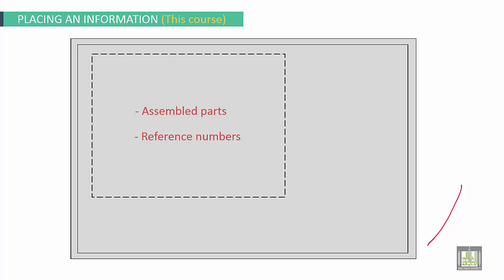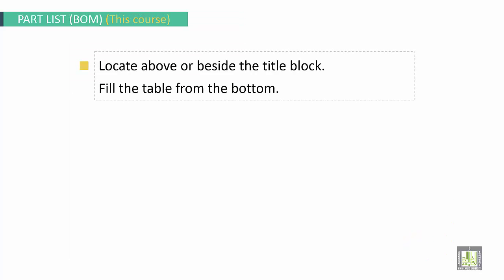Placing of information used in this course. Here we have assembled part and reference numbers. General note down here, we have the title block. The part list. Part list bill of materials used in this course. Locate above or beside the title block, fill the table from the bottom.